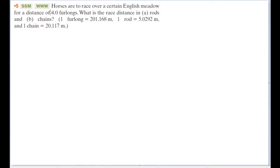Next problem. Alright, this is another conversion one. Horses are to race over a certain English meadow for a distance of 4.0 furlongs. What is the race distance in rods and chains? And then we're given some useful little conversion factors.